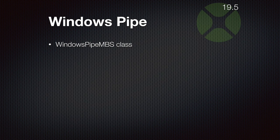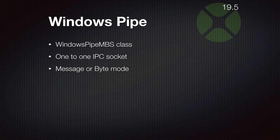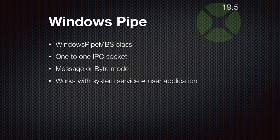For Windows we have a class for pipe — a one-to-one IPC socket so you can send data from one application running on a computer to a different application. It can work in two modes: a message mode which allows sending whole messages, where on the other side you receive the message once it is received completely; or a byte mode like normal Xojo sockets where you have to check yourself whether the whole package has arrived. There is also a method to enable the connection to other users' applications so your foreground UI application can talk to a system service running in the background.